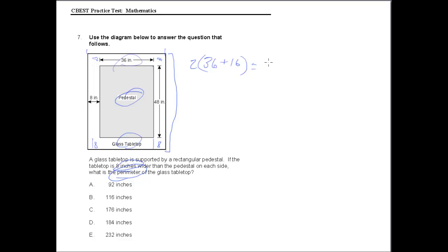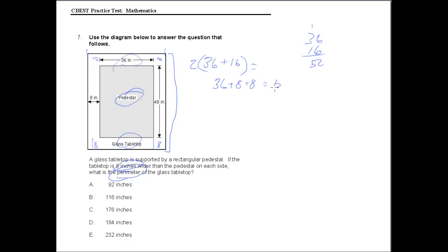If you're not feeling comfortable with all of that, this is a real easy thing to do fairly quickly. We'll just do: 36, which represents this number, plus 8 plus 8. And 36 plus 16 gives us 52.